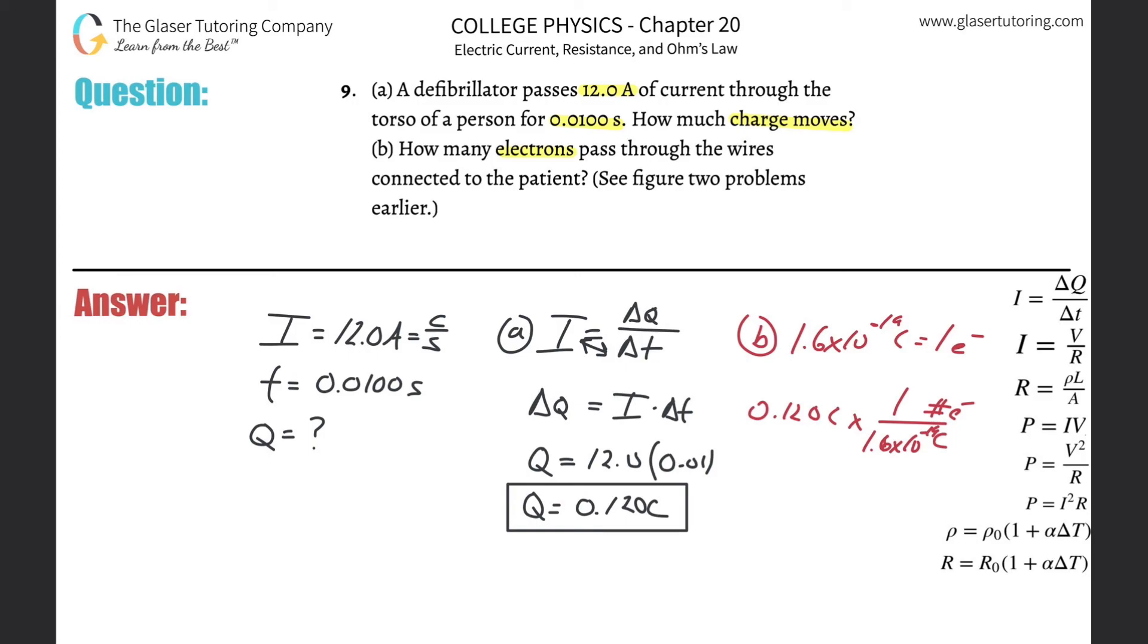So 0.12 divided by 1.6 times 10 to the minus 19, and we get a value of about 7.50 times 10 to the 17th number of electrons. Voila.